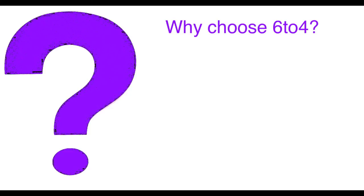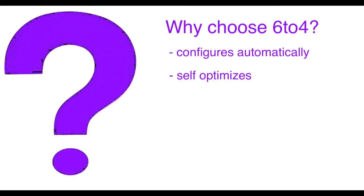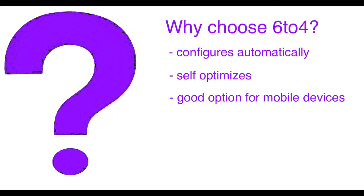Connecting to IPv6 via 6to4 has advantages as well. It's configured automatically, self-optimizes, and it's a good option for mobile devices. Because 6to4 uses anycast, debugging can be a bit trickier.